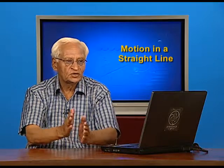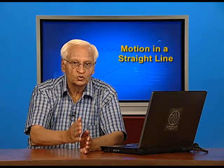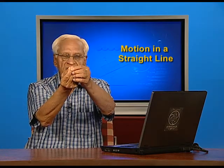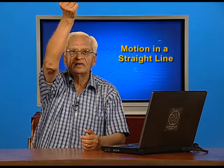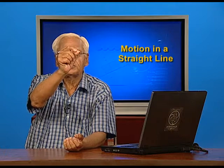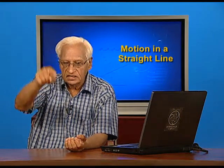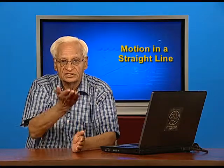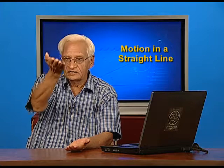We get two results, ±30 m/s, and we must choose the correct result carefully. In this case, both values are correct. v = +30 m/s is the velocity at 35 meters while going up, and v = −30 m/s is the velocity while coming down after having reached the highest point. The body reaches 35 meters height, keeps going, comes to rest, then starts moving downwards. The sign changes because of direction — upward is positive, downward is negative — but the speed at the same height is the same in both cases.